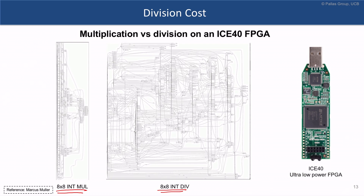As a result, ensuring that we don't have any division allows us to better utilize, for example, FPGAs or custom hardware ASICs.